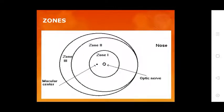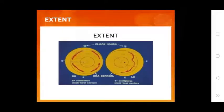Classifications of ROP include: zone, extent, stage, and plus disease. Zones indicate where ROP is located; lower zones are more serious. This is illustrated in the diagram.